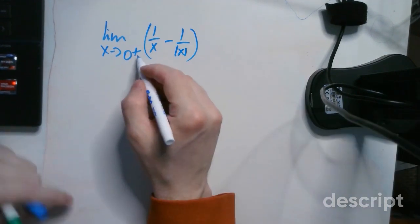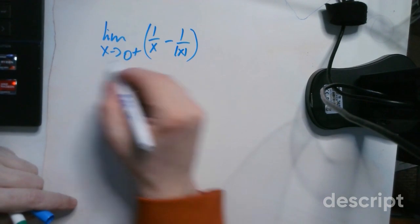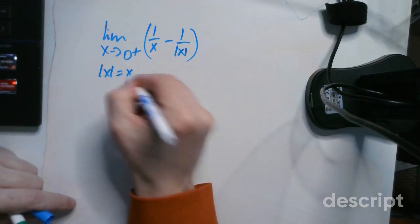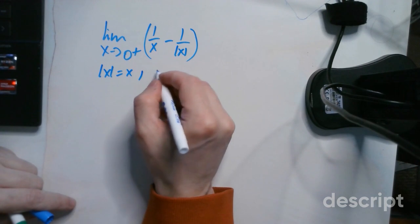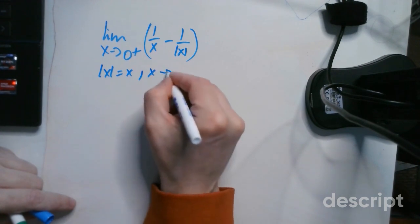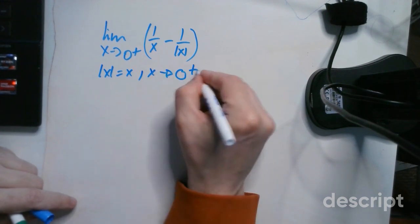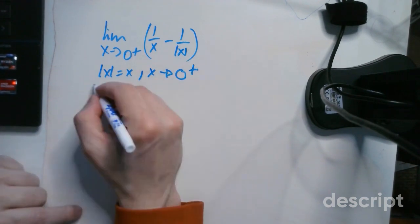Because x is approaching 0 from the right side, that's important to understand. That means the absolute value of x is just x, because we're told that x is going towards 0 from the right side. That means we can drop the absolute value.